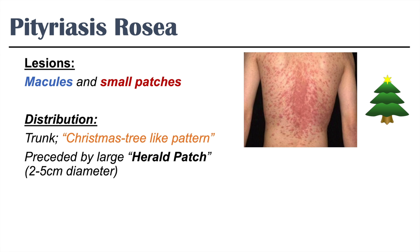This general presentation on the trunk is actually preceded by a large herald patch — and that's a key word. The herald patch is a larger lesion, around 2 to 5 cm in diameter, that can actually be the beginning of this condition.